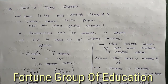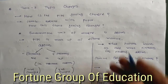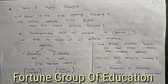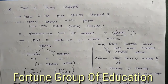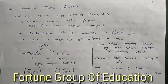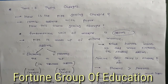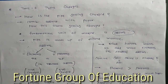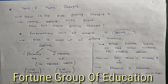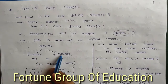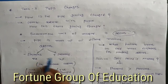First of all, we have to understand about the fundamental unit of matter. The fundamental unit of matter is the atom. For example, a pipe is made up of different molecules, and our different bodies are also made up of different molecules. Now, if we zoom in on one molecule, we can see there are different types of atoms.